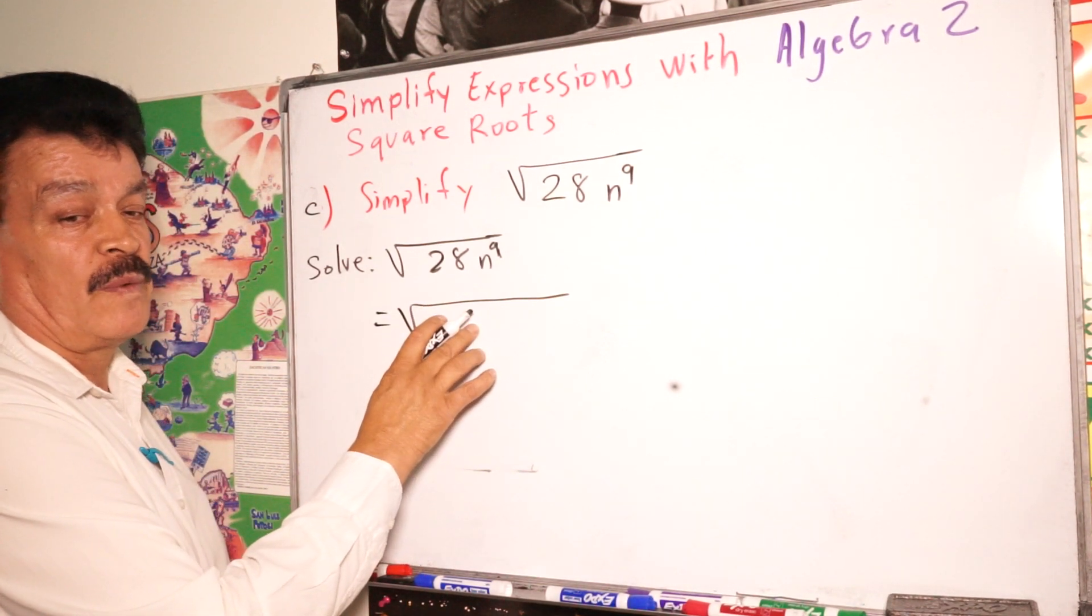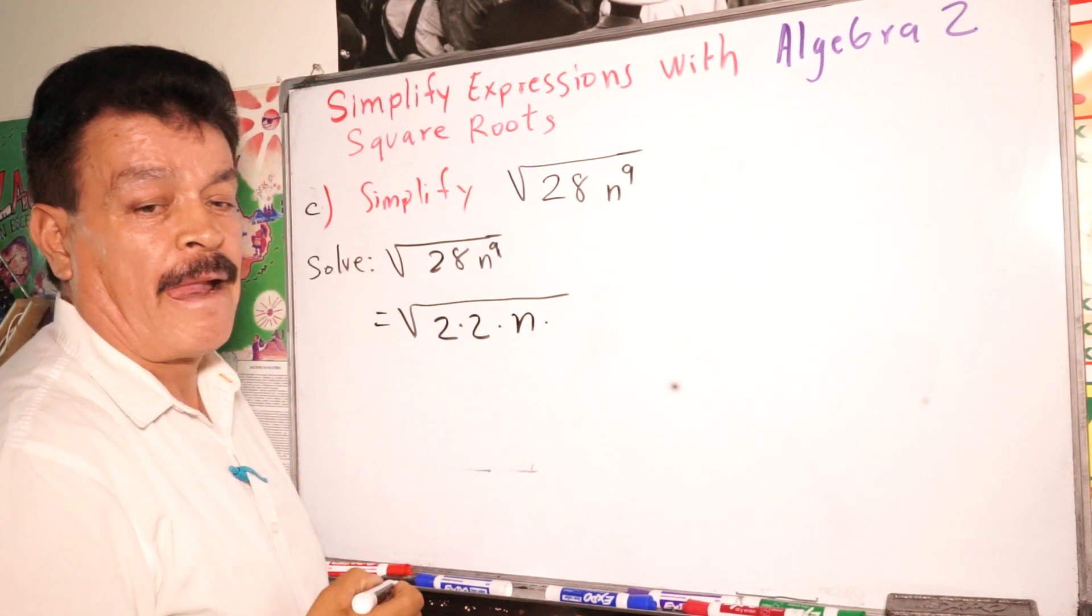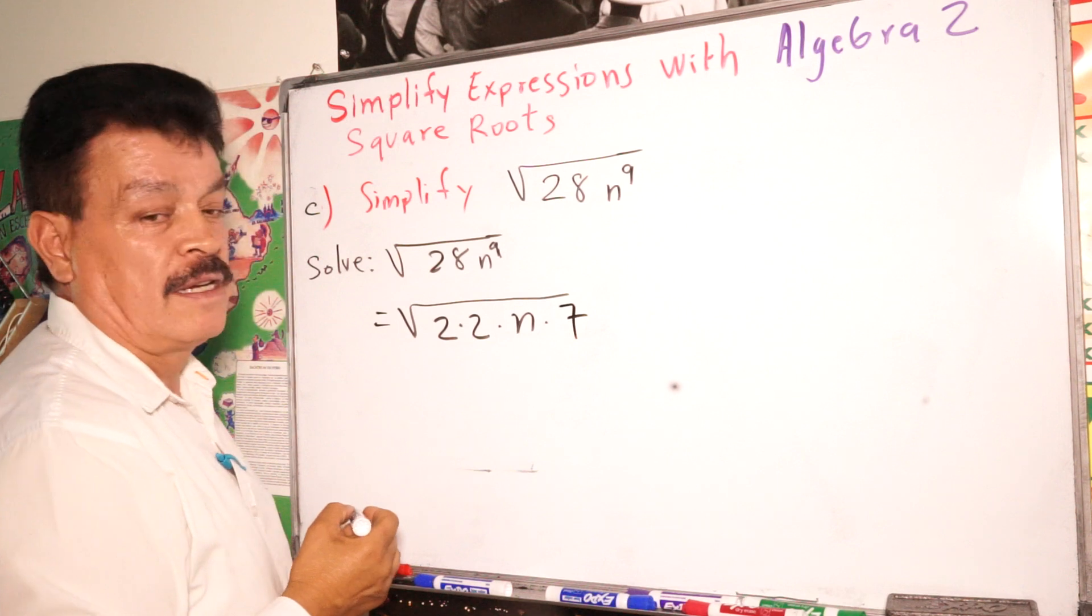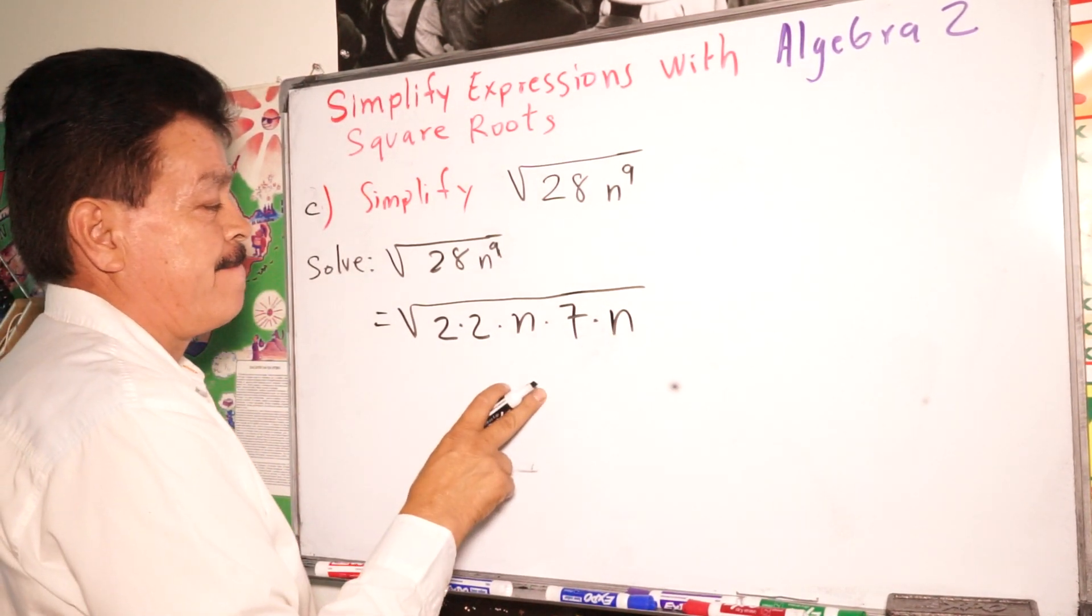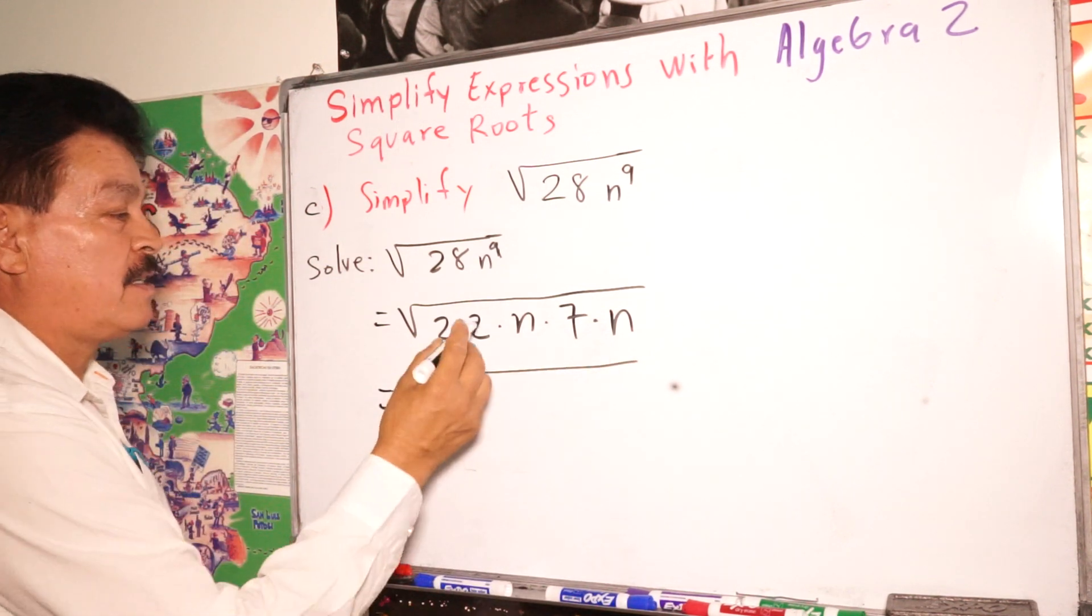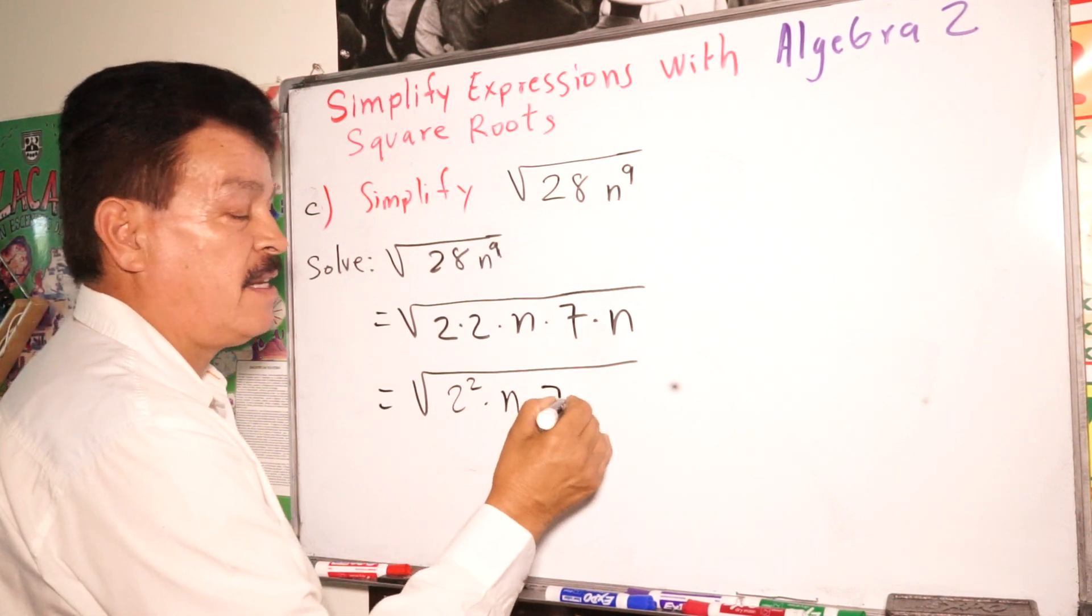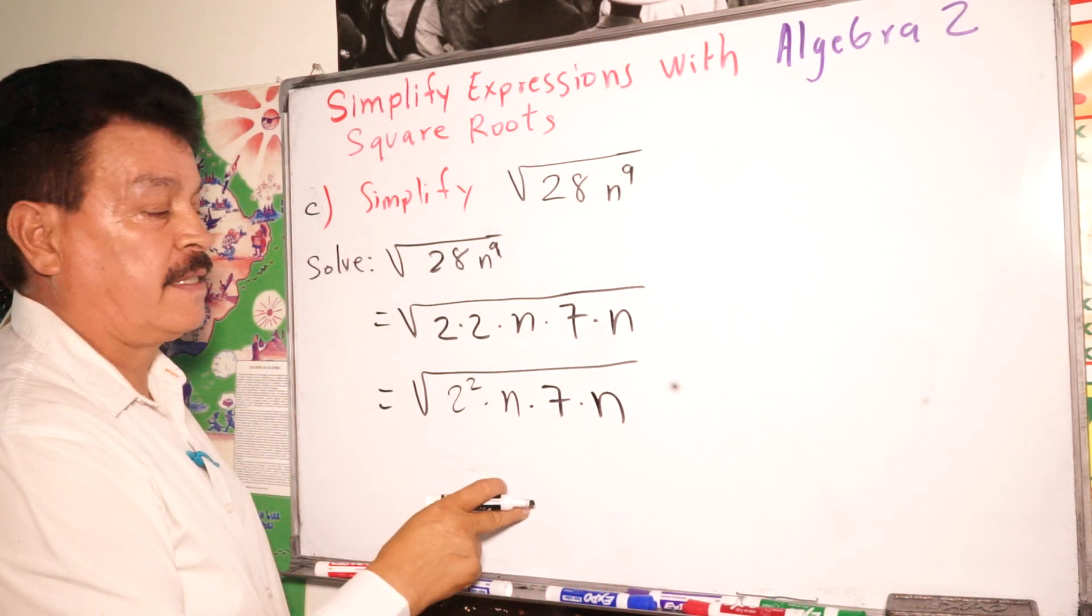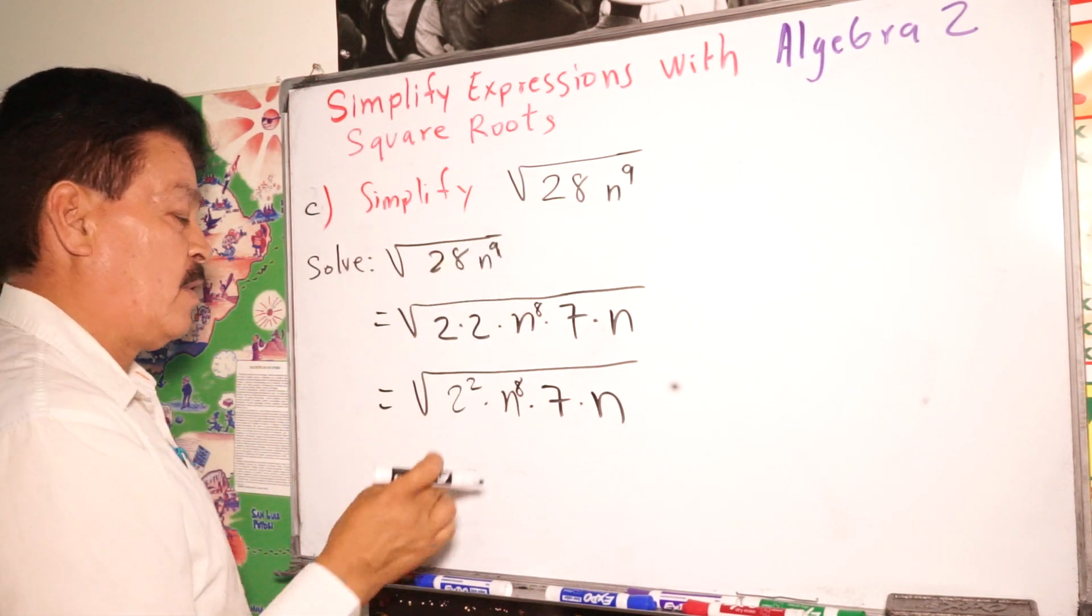Divide it here, in this case we have 2 times 2 times 7 times n to the 8th. You simplify here, it's gonna be 2 to the 2nd power times 7 times n, but let's write 8 right here. I'm missing the 8, it's n to the 9th power.